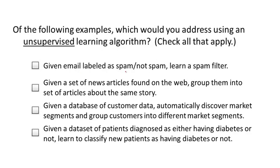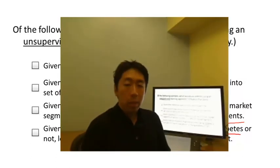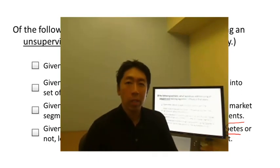The spam filter problem: if you have labeled data of spam and non-spam email, we treat this as a supervised learning problem. The news story example — that's exactly the Google News example — where you use a clustering algorithm to cluster news articles together, so that's unsupervised learning. The market segmentation example is an unsupervised learning problem because we just give the algorithm data and ask it to discover market segments automatically. The diabetes example is just like the breast cancer example — we have diabetes or not — so we solve that as a supervised learning problem. That's it for unsupervised learning, and in the next video we'll delve into specific learning algorithms and start to talk about how they work and how to implement them.